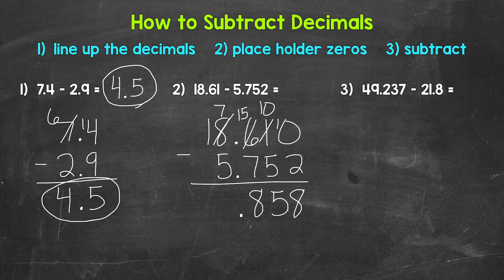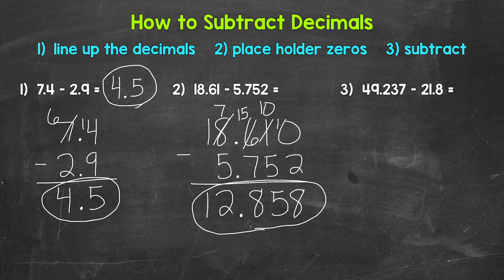Bring the decimal straight down into our answer. Now we have 7 minus 5, which gives us 2. And then we have a 1 in the tens place. So this is our final answer: 12 and 858 thousandths. So 18 and 61 hundredths minus 5 and 752 thousandths equals 12 and 858 thousandths.